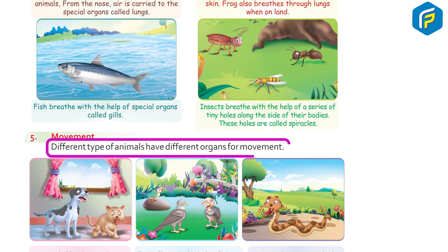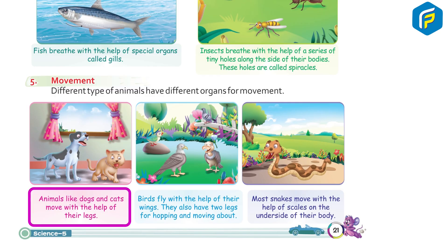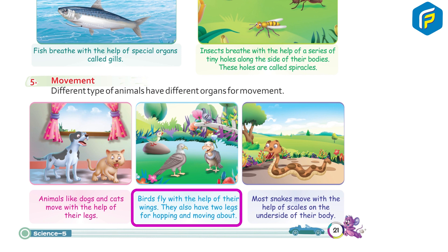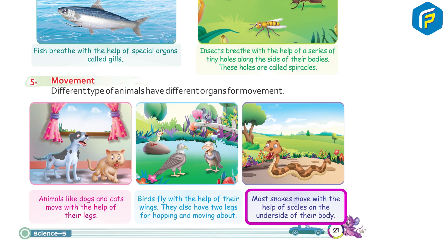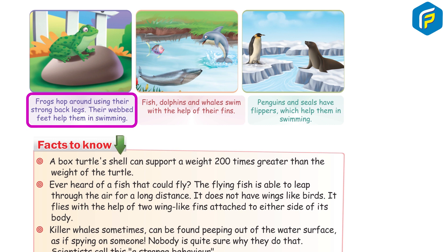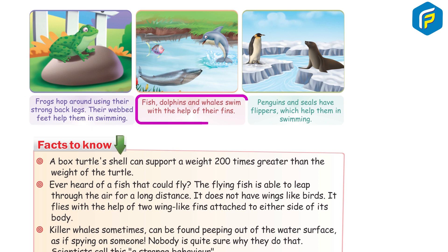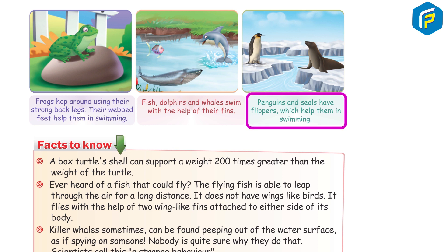Different types of animals have different organs for movement. Animals like dogs and cats move with the help of their legs. Birds fly with the help of their wings and also have two legs for hopping and moving about. Most snakes move with the help of scales on the underside of their body. Frogs hop around using their strong back legs, and their webbed feet help them in swimming. Fish, dolphins, and whales swim with the help of their fins. Penguins and seals have flippers, which help them in swimming.